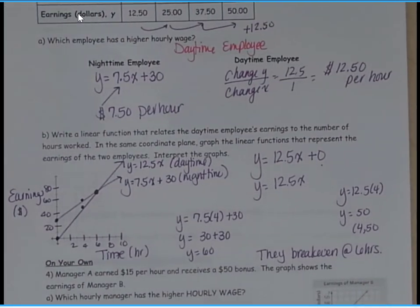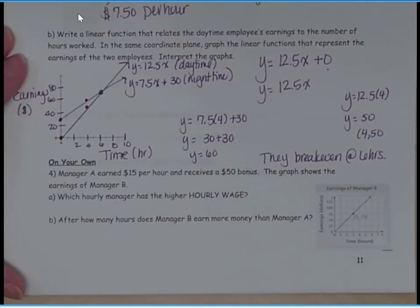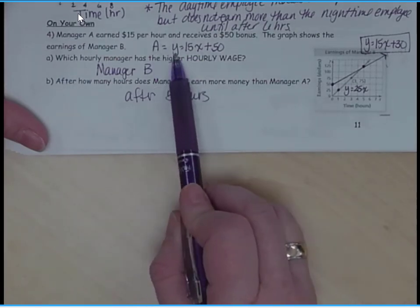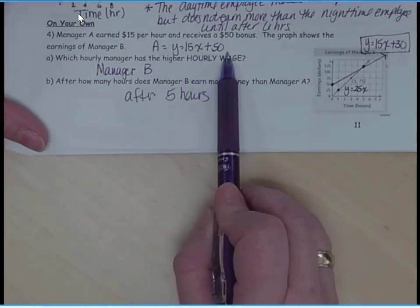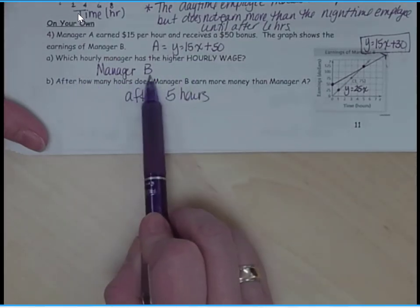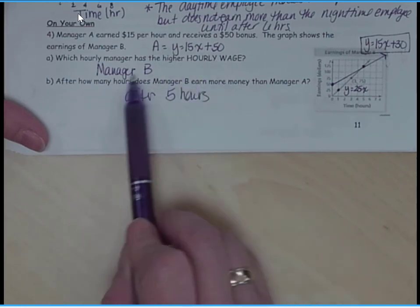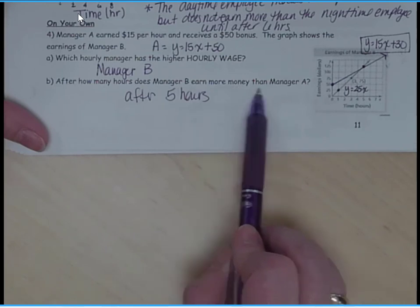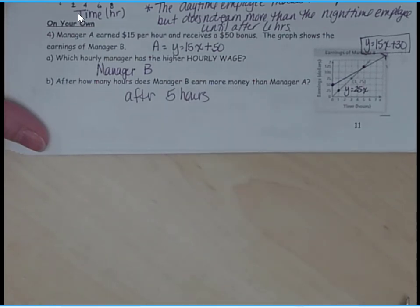All right. On your own, number 4, go ahead and hit pause. When you're done, come on back. All right. So my equation for employee A is y equals 15x plus 50. So manager B makes a higher hourly wage. And manager B is going to earn more money than manager A after 5 hours. Great job, everybody. Have a wonderful day.